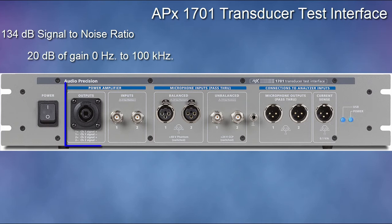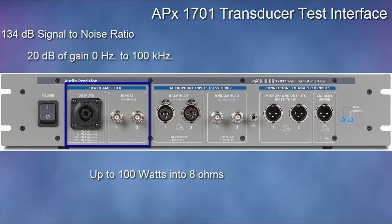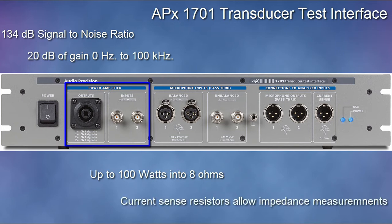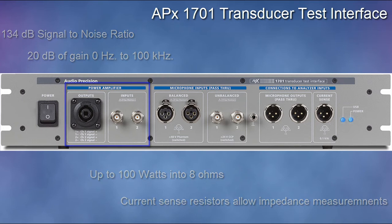The system's power amplifiers are configured as two independent channels, with power ratings up to 100 watts for a single channel into an 8-ohm load. Voltage taps across integrated current-sense resistors in the amplifier outputs enable easy impedance measurements.